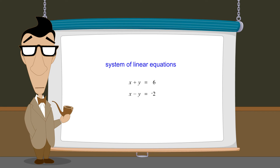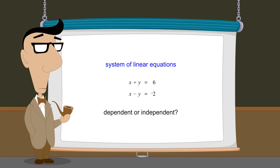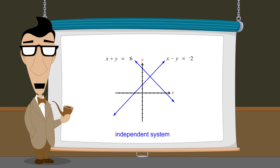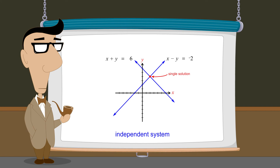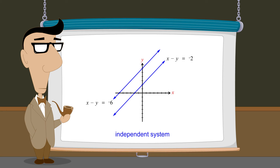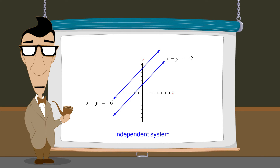We then introduced the concepts of dependent and independent systems. We showed that an independent system of two equations and two variables always has a graph consisting of two distinct lines. Those lines can intersect at a single point, giving the system a single unique solution, or the lines can be parallel, in which case the system will have no solutions.